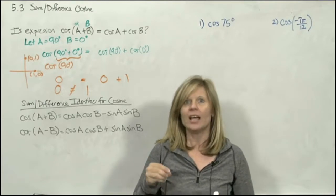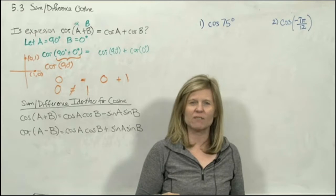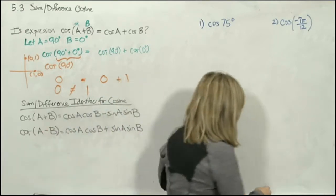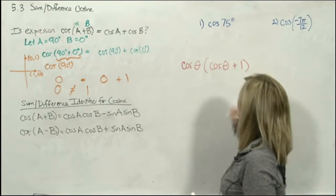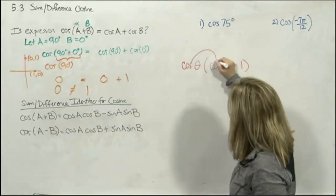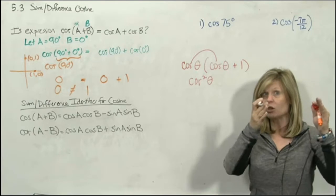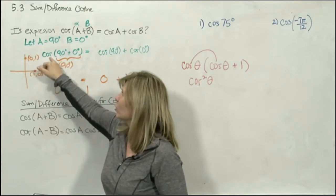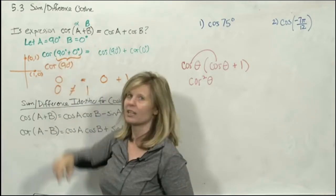You might be thinking: in section 5.2 we did distribute. Yes, but it wasn't just the word cosine — it was cosine theta times cosine theta. You can distribute a trig function if it's written correctly, meaning you have both the trig word and the angle with it. For cosine(alpha + beta), there's no single theta because two angles belong to that trig function. You can't just distribute the COS — there's nothing to distribute.